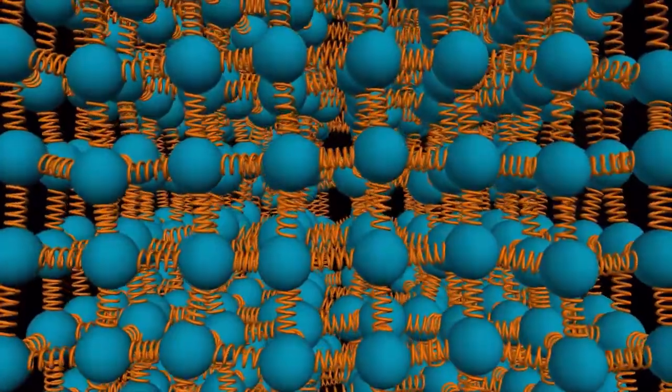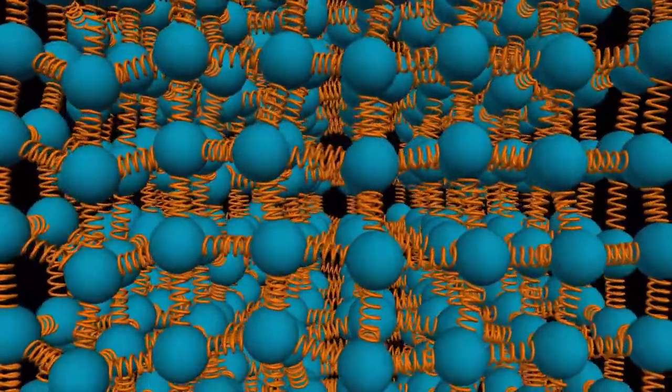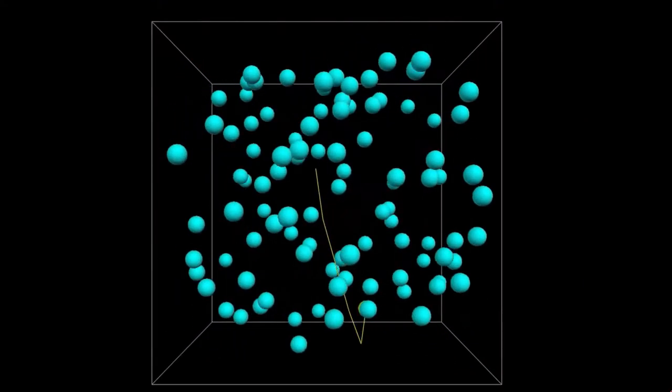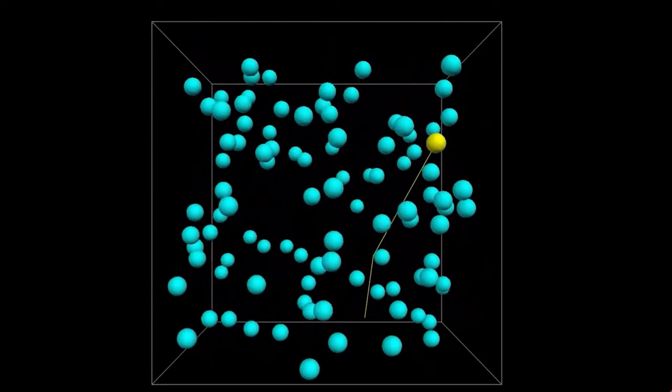Now that's in a solid where there are chemical bonds between everything. If we look at a gas, like the air that you're currently breathing, this is what it's doing. The air molecules are bouncing around, up, down, left, right, bouncing off each other all the time.